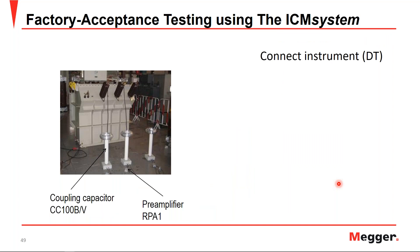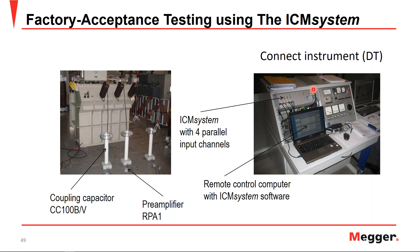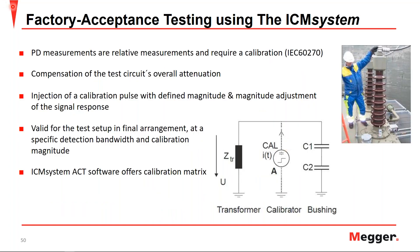For distribution transformers, since test taps on bushings are not available, coupling capacitors are used to decouple the signal. The signal goes from the terminal through a corona ring and the coupling capacitor — which contains the measuring impedance at its base — then through pre-amplifiers for signal conditioning and amplification, then to the ICM system with four parallel channels and a remote control computer with the ICM software.